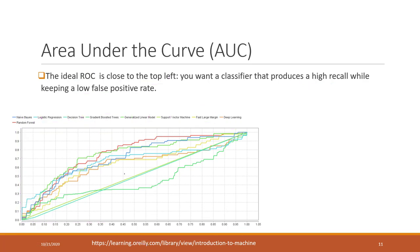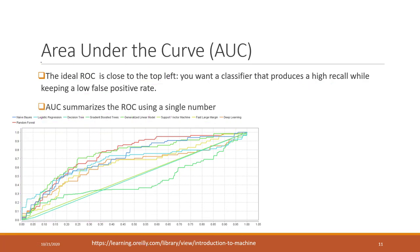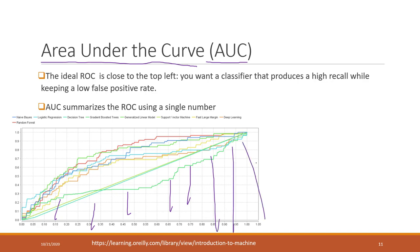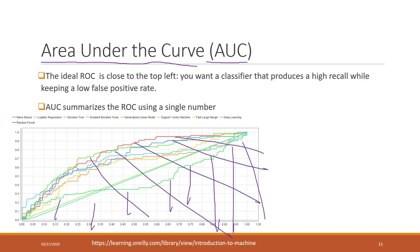Once we have the ROC curve, we can also calculate the area under the curve, which is called AUC. For example, the green line (Gradient Boosted Trees) has a smaller area, while the red line (Random Forest) has a much bigger area. AUC summarizes the ROC using a single number — the higher the AUC, the better the model.